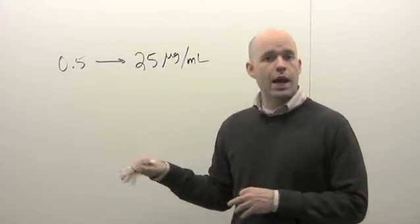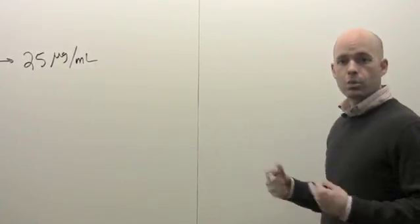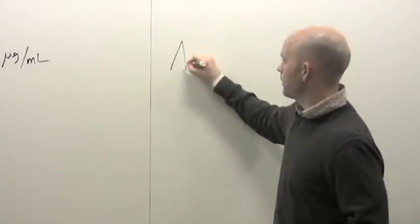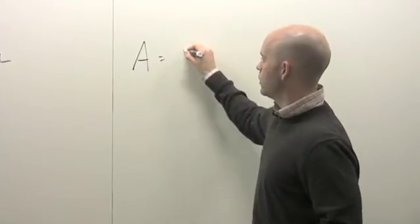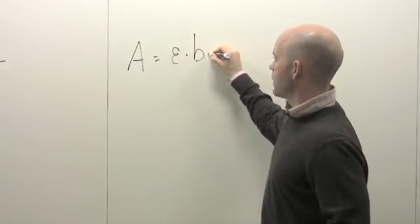Now keep in mind that these shortcuts are actually derived from the Beer-Lambert equation, which states that the absorbance value of a sample is related to the molar absorptivity times the path length times the concentration.